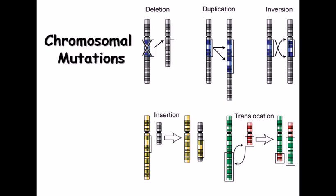There are different levels of mutations: chromosomal-level mutations and genetic-level mutations. At the chromosomal level, there are five different types: deletion, duplication, insertion, inversion, and translocation.